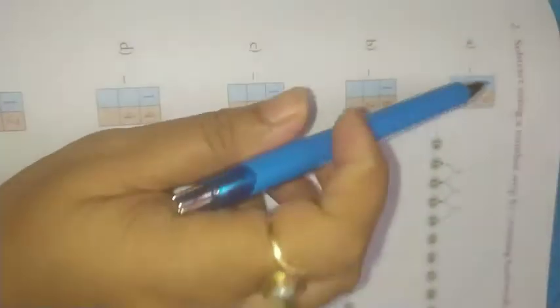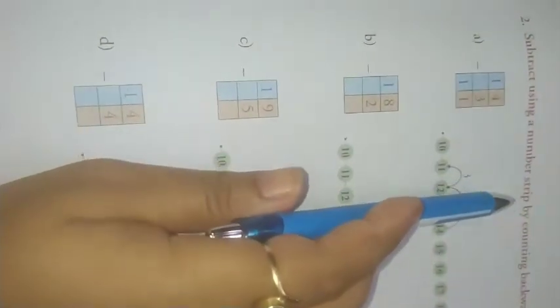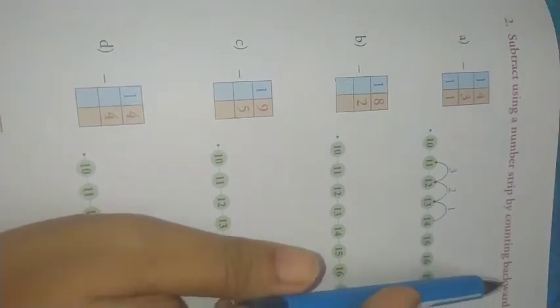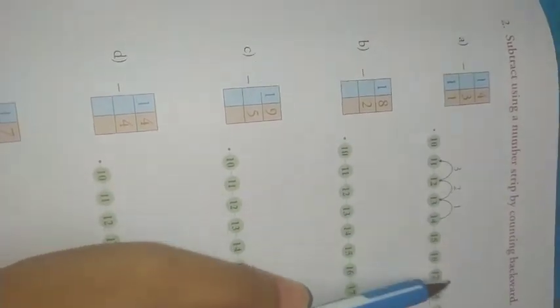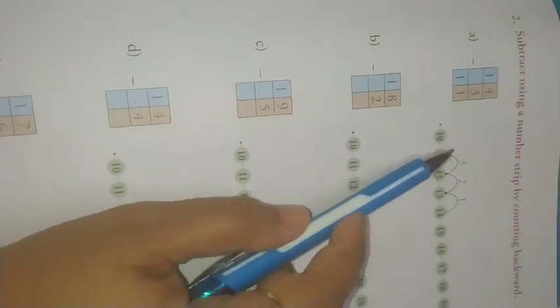Now children, you see question number 2: subtract using a number strip by counting backward. In addition you have to count forward in number strips, but in subtraction you have to count backward. Method is same.